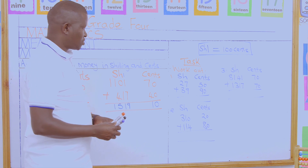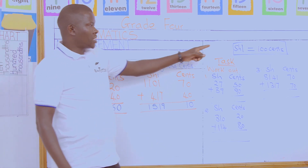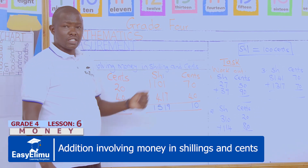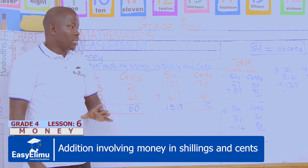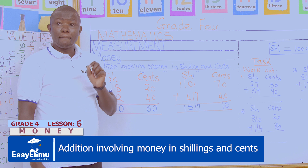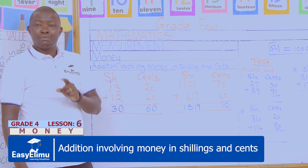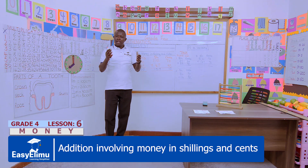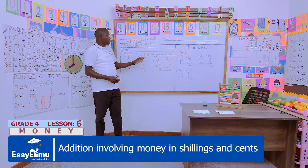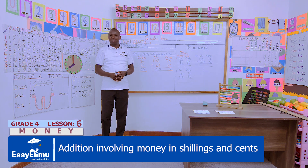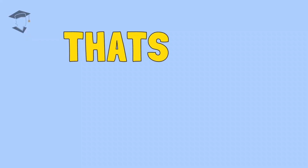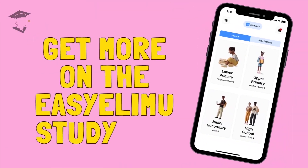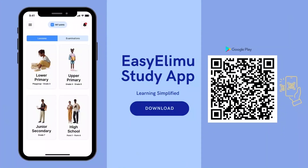These are our three tasks to work out. Remember: alignment is very key, regrouping where possible is very key. Remember to do more practice at home — you can ask your parents or guardians to come up with many sums involving addition of money in shillings and cents and try to add them. See you in the next lesson!